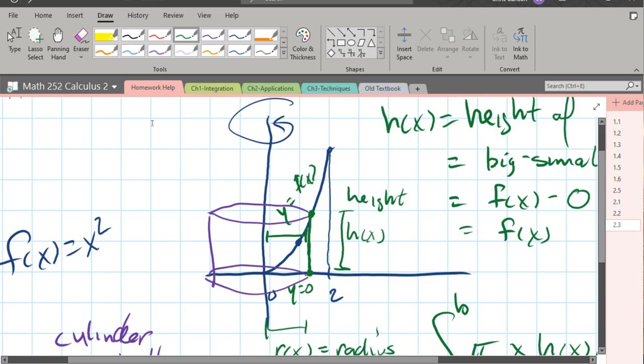If your region happened to be out here, and you're still rotating on the y-axis, then this would be your radius, and you would do big minus small,